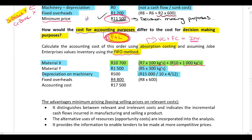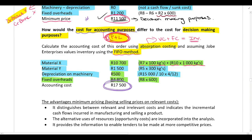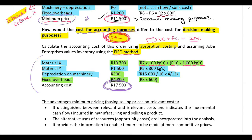Depreciation affects profit and loss so it must be included. For fixed costs, the full 8 Rand per unit × 600 units is used — not just the incremental portion — because we are working out the actual accounting cost, not making a decision. The only time you do this accounting cost calculation is if the question specifically asks for it. For decision-making and minimum price questions, we use relevant costing with only incremental costs.